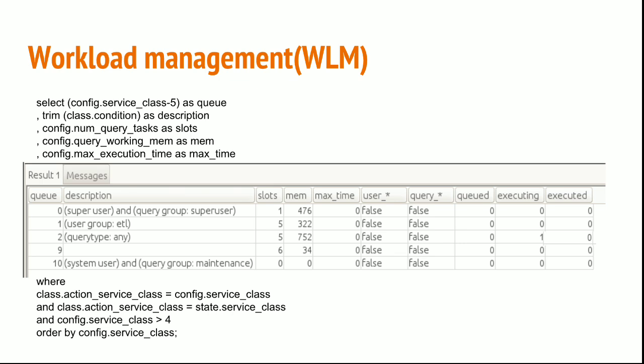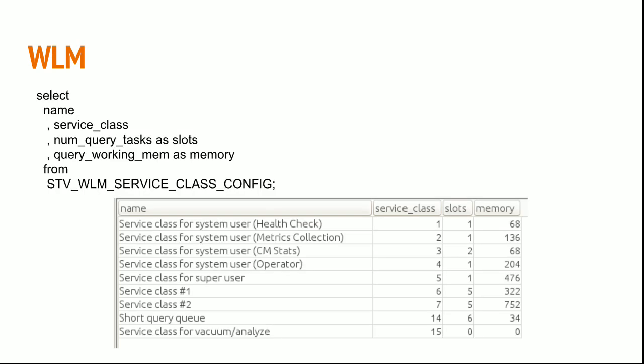The result of the query would be like this. You have queues 0, 1, 2, 9, and 10. Queue 1 is a superuser queue, ETL queue is 1, and default is 2. Queue 9 is for short running queries, and 10 is a system queue. You can also run the following query to see the memory allocated and number of slots each queue has. All the service classes are system queries and service class 5 is the superuser. Classes 6 and 7 are the ones we created — ETL and reporting — and 14 is for short running queries.